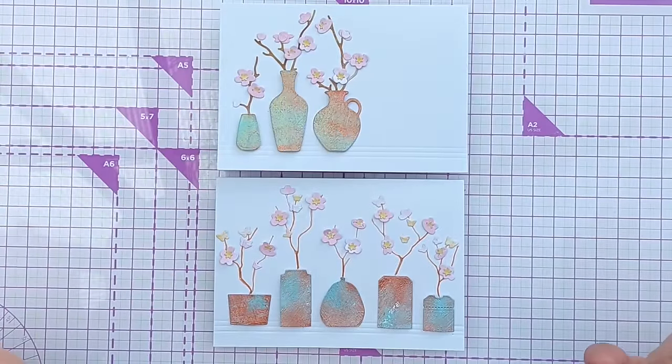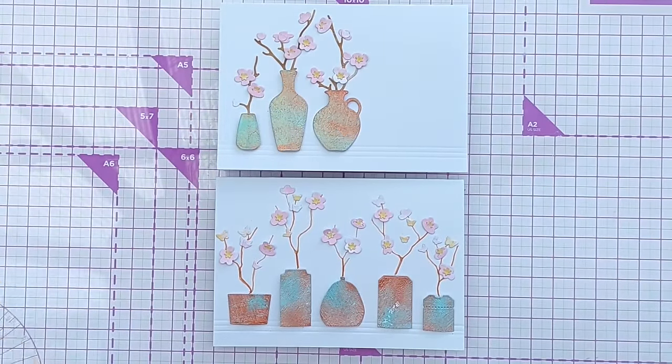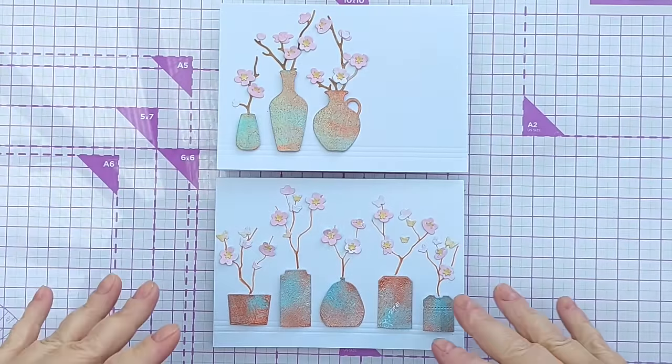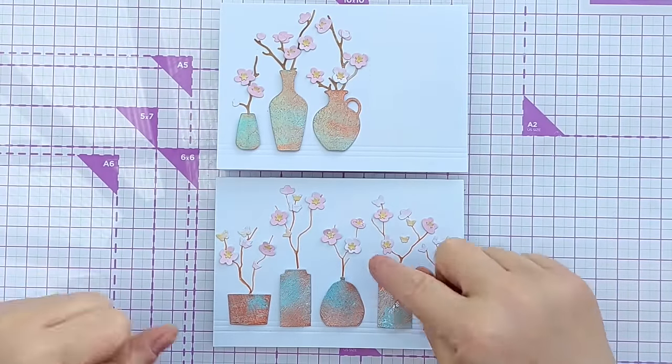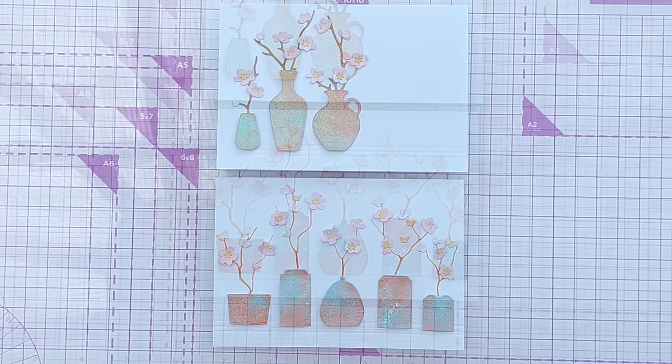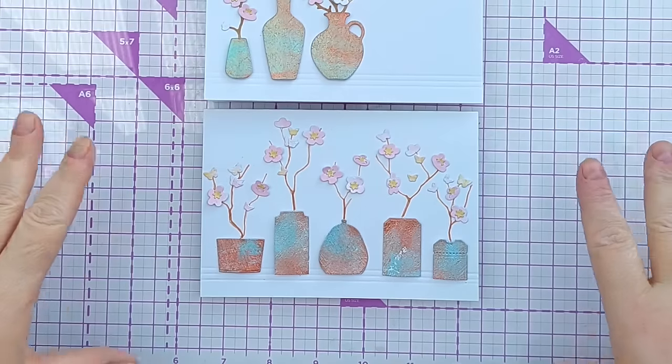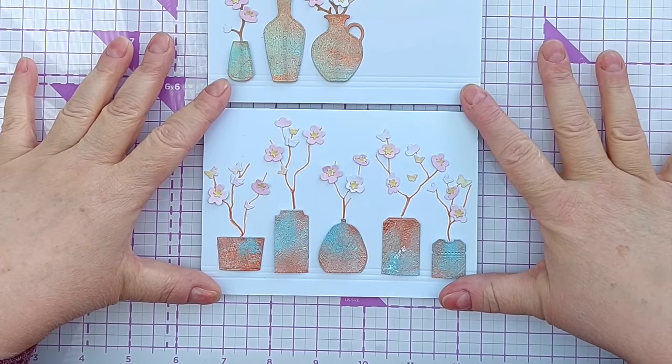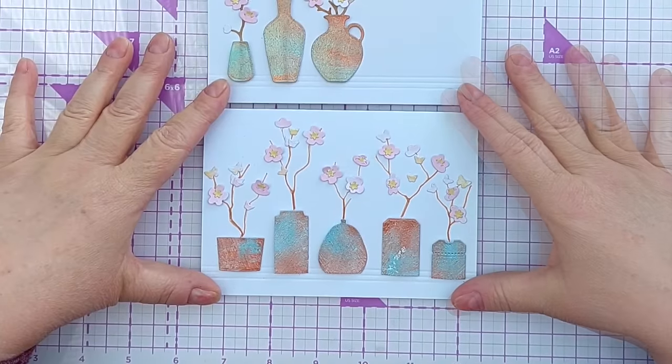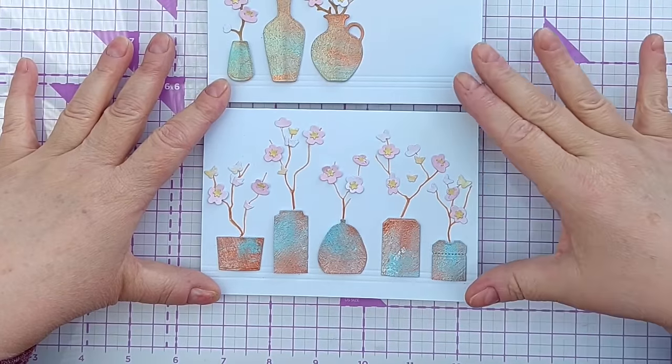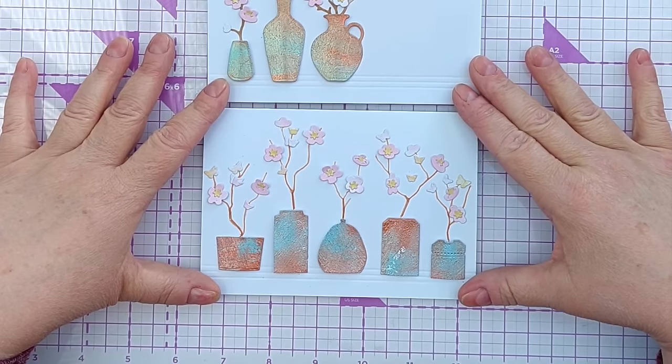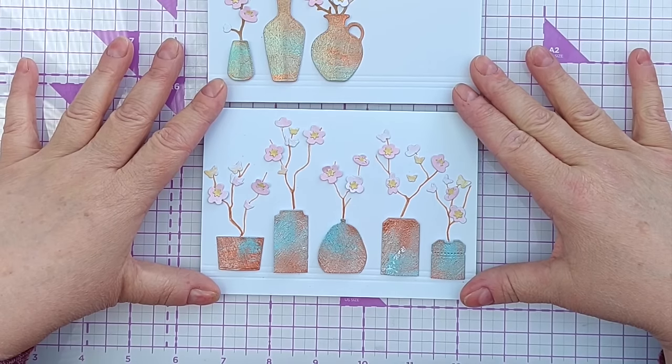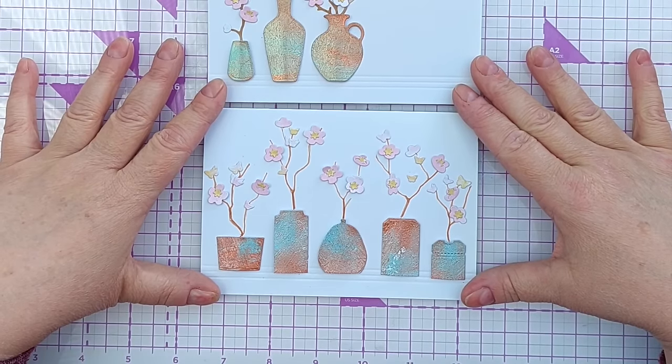So there you go two cherry blossom vase cards one made using a designed for the purpose die set the other one using bits from a stash mostly apart from the little flowers but I could have used other flower dies. So I hope you found that helpful and it's encouraged you to go rummaging through your stash to see what basic shape dies you can turn into vases like this or anything else really. If you're making the cards using this kind of masquerading technique do come over to my Facebook group and share some pics. I would love to see what you put together and if you want to see more videos from me do subscribe and ring the notification bell and I'll see you back here very soon. Thanks for watching bye for now.